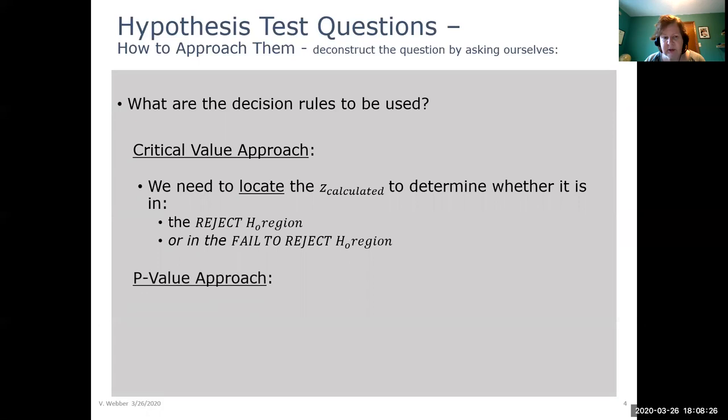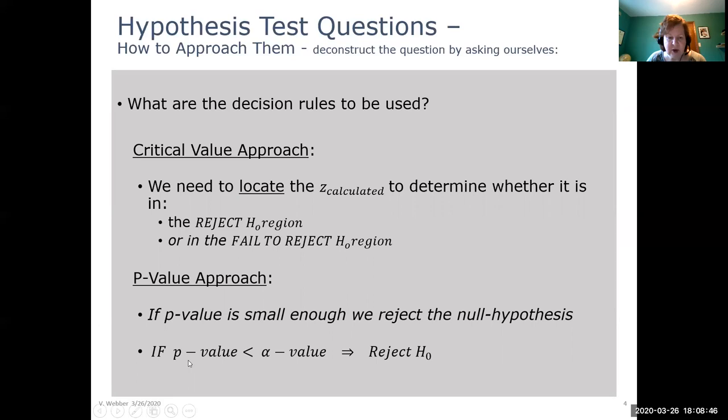Our other approach is the p-value approach. And the p-value approach is based on that if the p-value, remember which is a probability value, is small enough, we're going to reject the null hypothesis. In sort of an expression format, if the p-value is less than the alpha value, we reject H0. And remember, these are not subtraction symbols here. It's just a dash for the name.